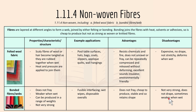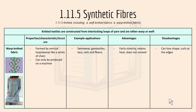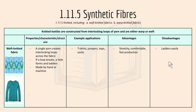Section 1.11.5 covers knitted textiles, constructed from interlocking loops of yarn and are either warp or weft knitted. Warp knitted fabric forms vertical loops like a series of chains and can only be produced on a machine. Examples include swimwear, geotextiles, lace, net, and fleece. Advantages: fairly stretchy, retains heat, and does not unravel. Disadvantage: can lose shape and curls at the edges.